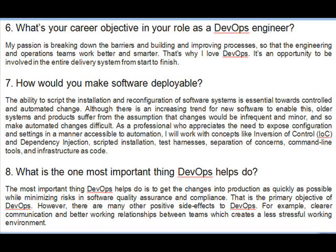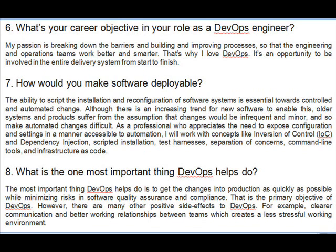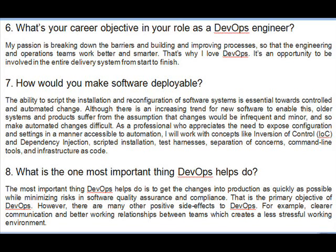Question 7: How would you make software deployable? The ability to script the installation and reconfiguration of software systems is essential towards controlled and automated change. Although there is an increasing trend for new software to enable this, older systems suffer from the assumption that changes would be infrequent and minor, making automated changes difficult. I will work with concepts like inversion of control (IOC), dependency injection, scripted installation, test harnesses, separation of concerns, command line tools, and infrastructure as code.